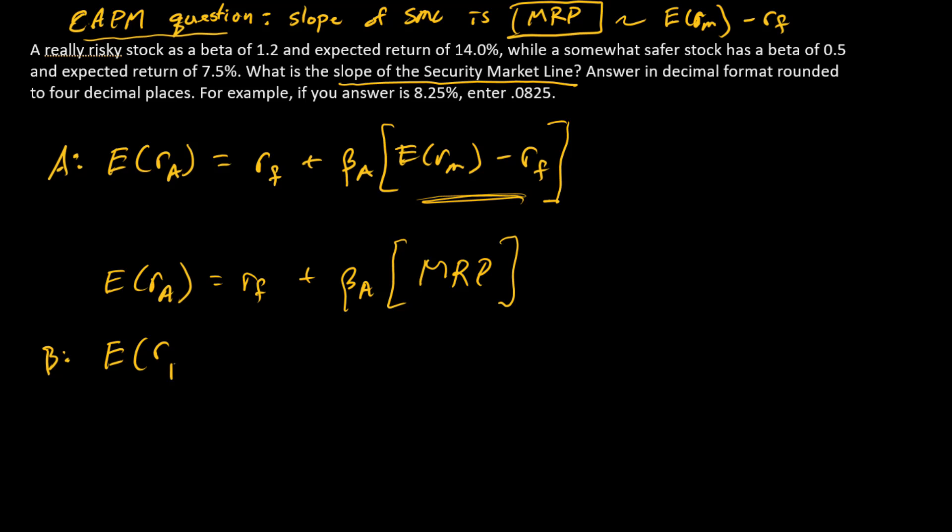And so let me go ahead and write what we're given with stock B as well. So for stock B, we're given these amounts. We're given the two expected returns and we're given the two betas. And we are after this right here. This is what we want.